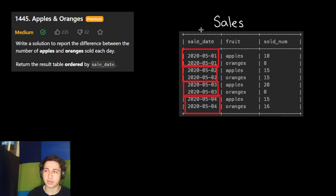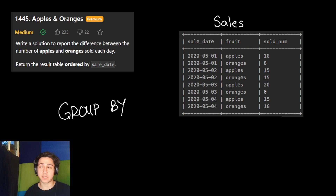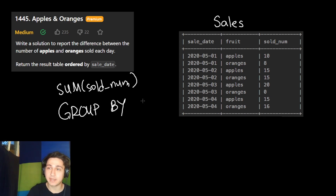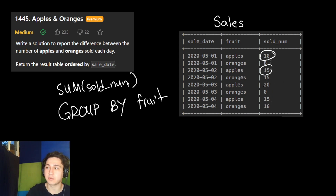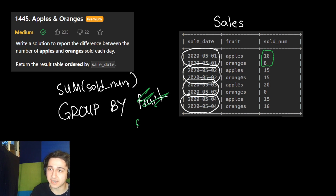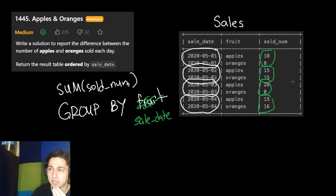GROUP BY is often used when you want to perform an aggregate function on a SQL table. For example, if I wanted to find how many apples and oranges were sold, I'd say give me the sum of the sold number column. If I just summed the whole column, it would add everything up and return the total. But using GROUP BY fruit, it would give me the sum of all the apples — 10, 15, 20, and 15 — and then the sum of all the oranges. In this case, our GROUP BY will be used differently: we're going to group by the sale date column, summing together rows for each day.